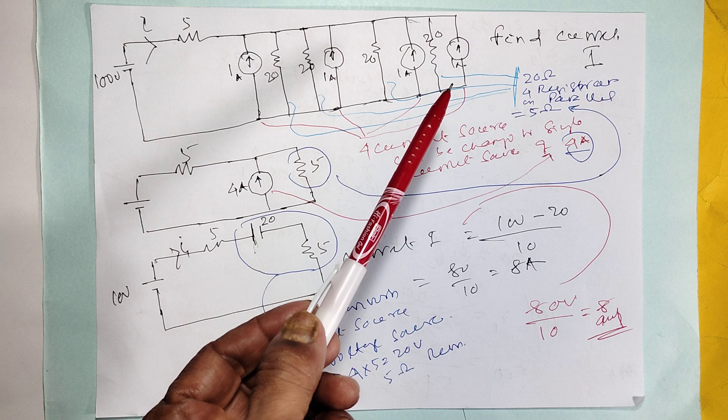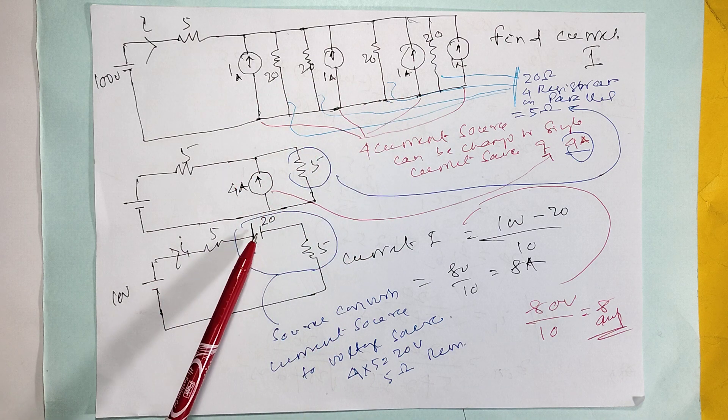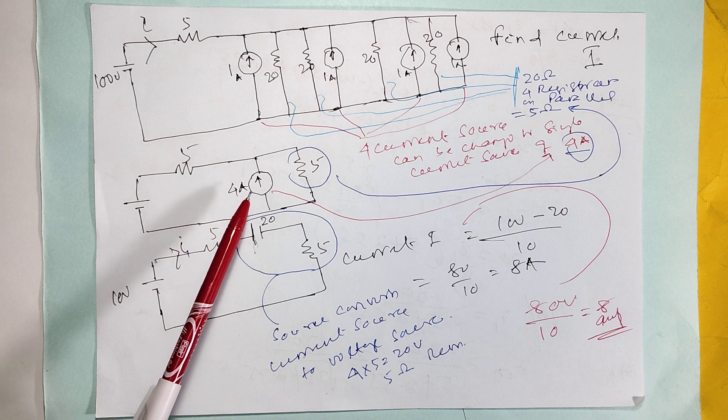These 4 20-ohm resistors in parallel equals 5 ohm. Now it comes to source conversion. Source conversion is nothing but 4 into 5 is 20 volt.